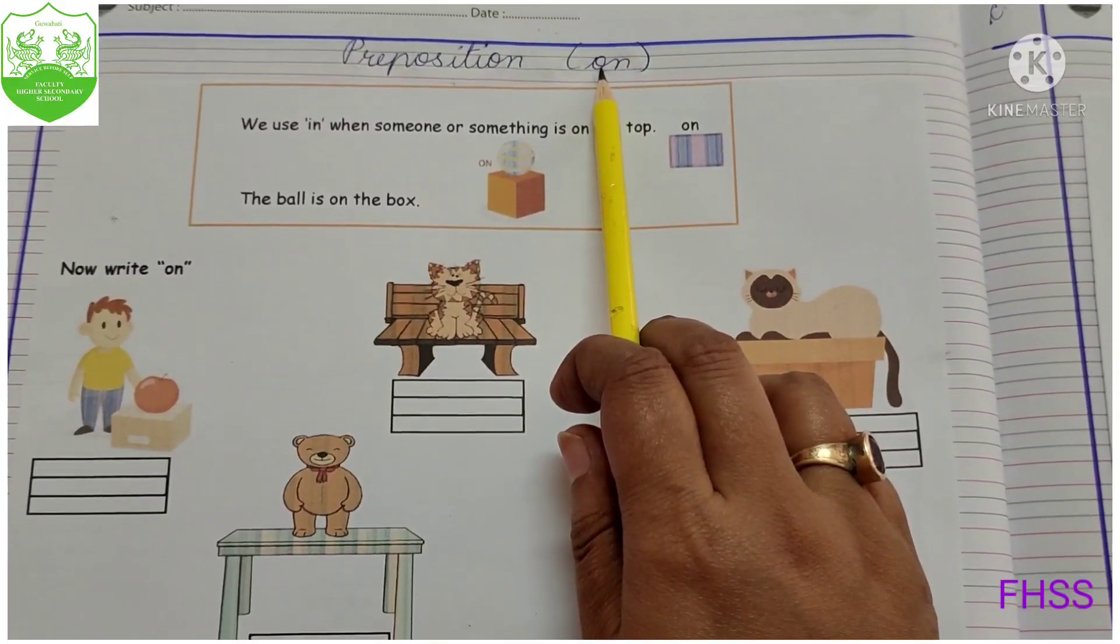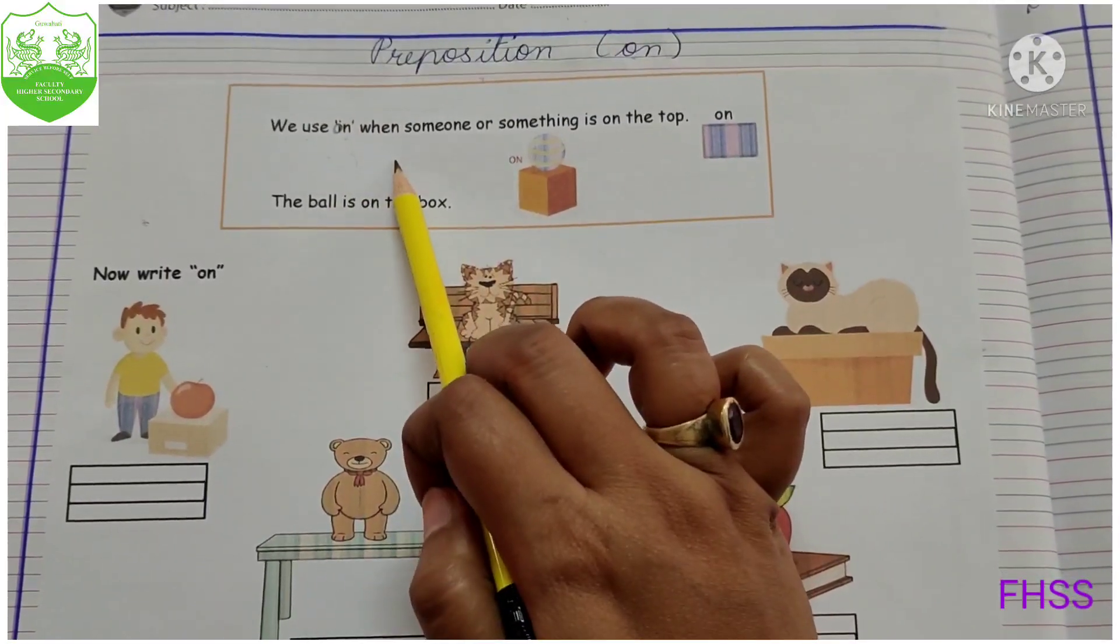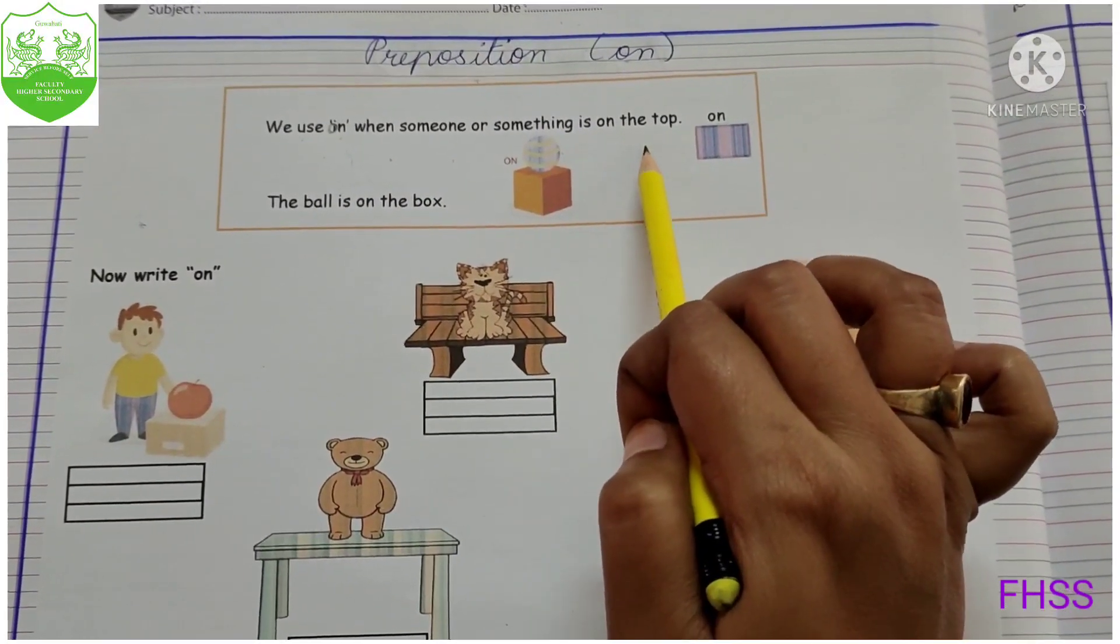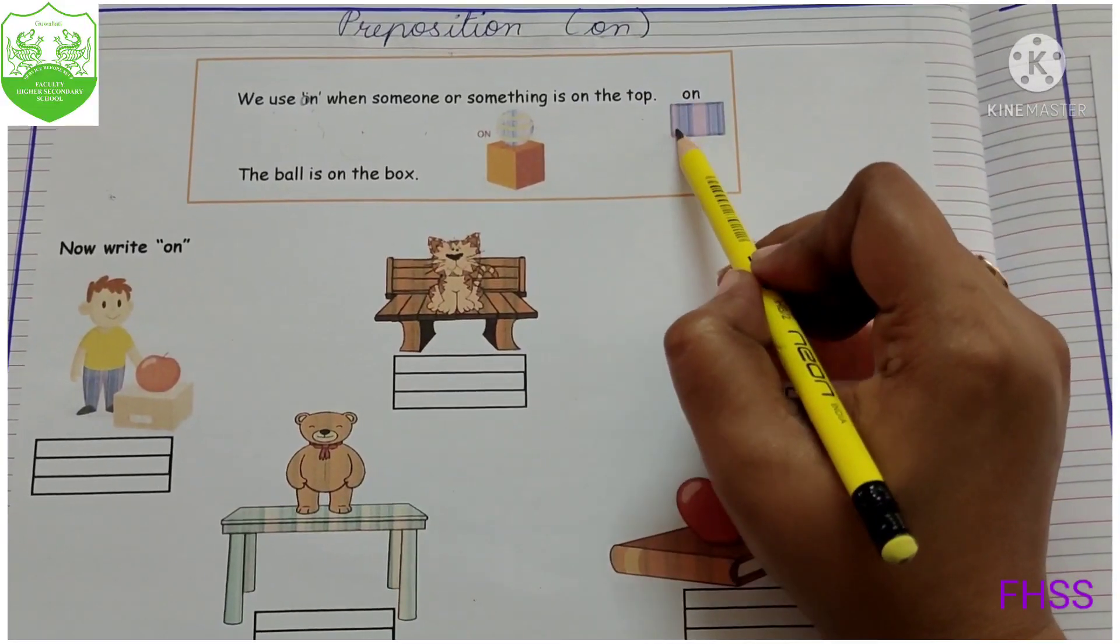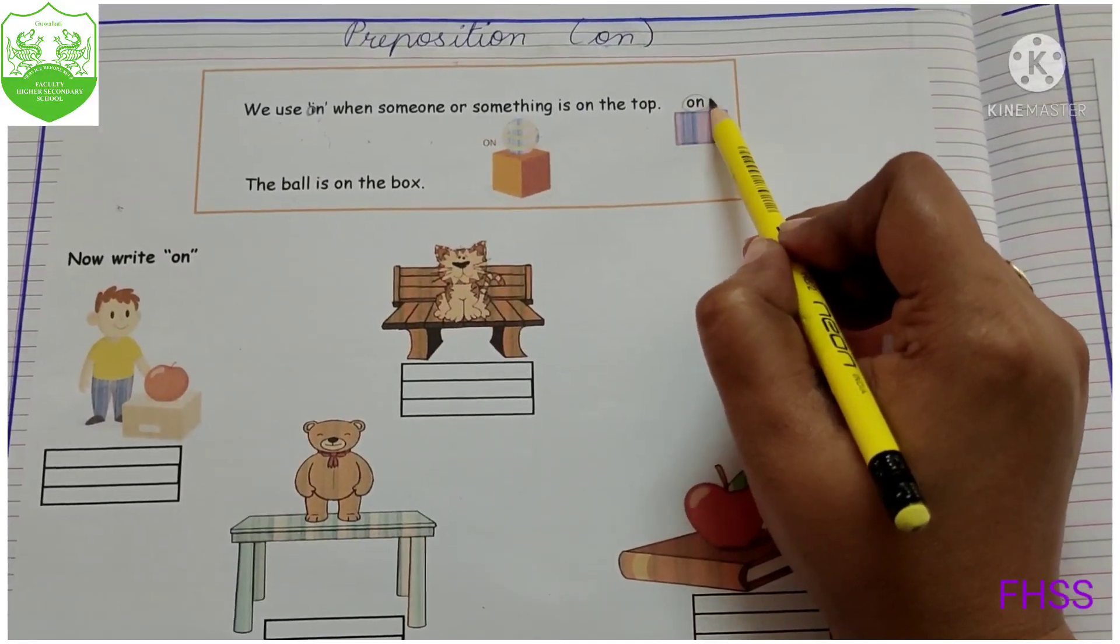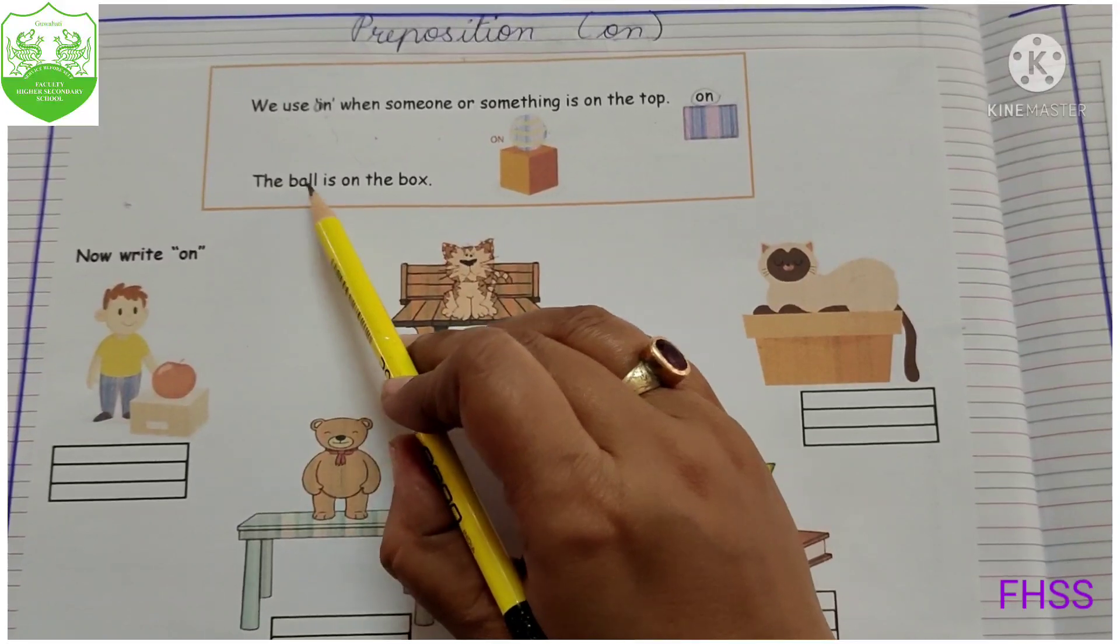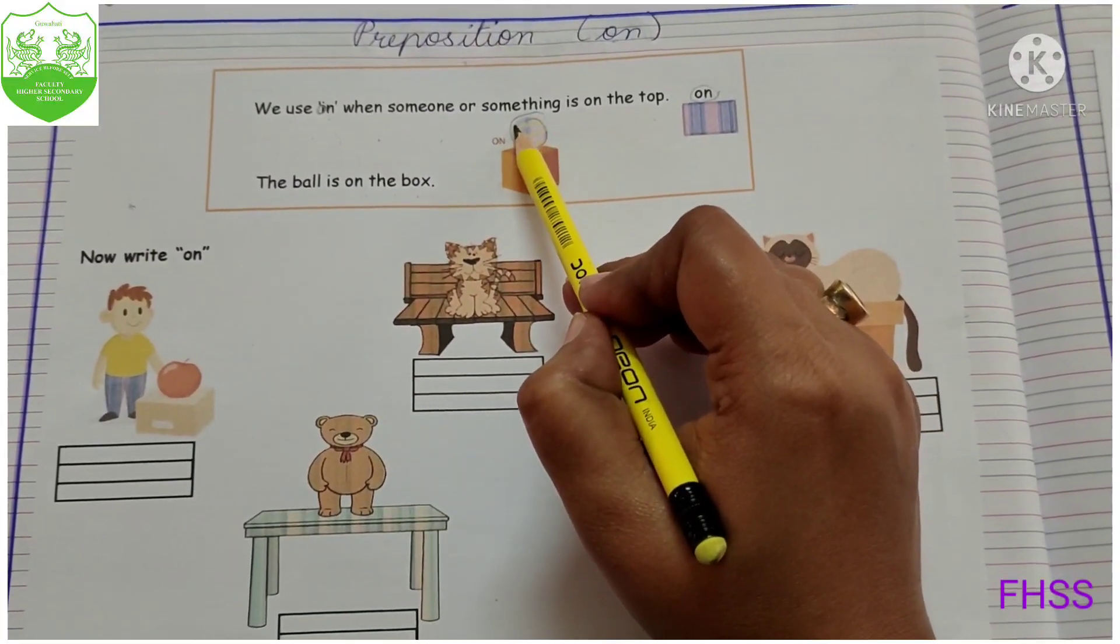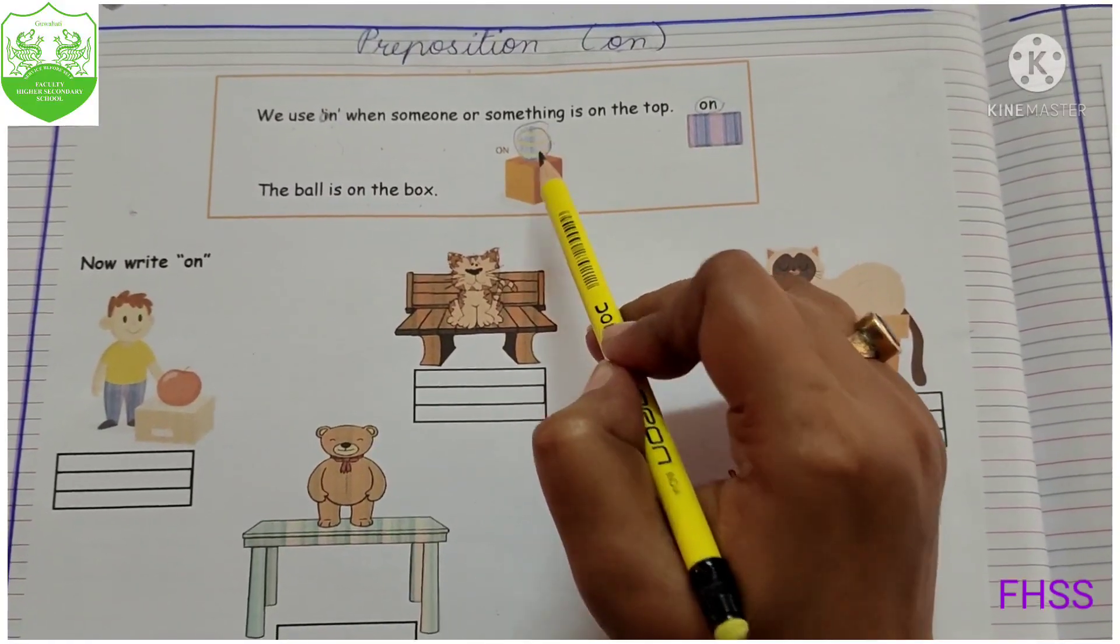Where to use on? We use on when someone or something is on the top. So look at the box. The ball is on the box. So now look at the box. Ball where it is? It is on the top of the box.